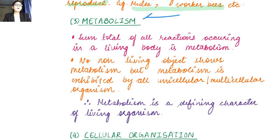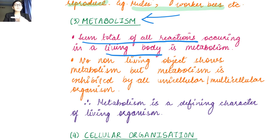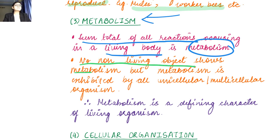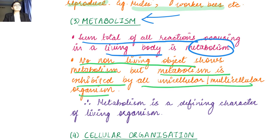Now we come to metabolism: it is the sum total of all the reactions occurring in a living body — all chemical reactions together make up your metabolism. This is a defining feature because no non-living object shows metabolism, but metabolism is exhibited by all living objects, whether unicellular or multicellular. That is why metabolism is a defining characteristic.